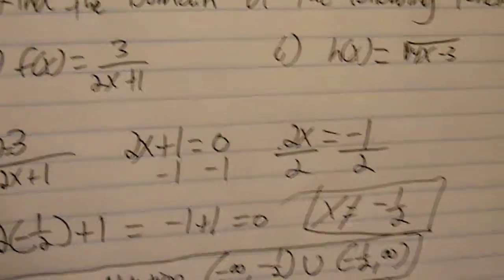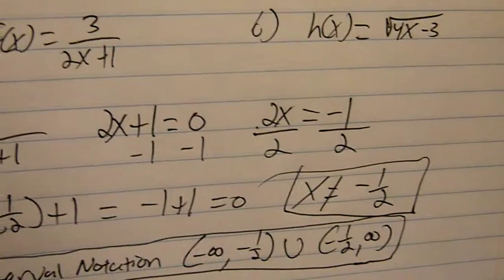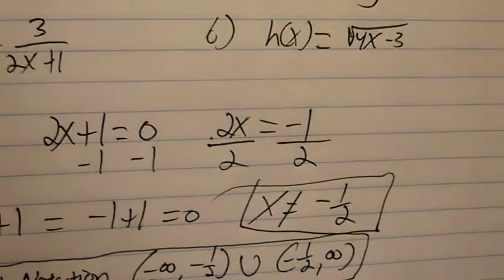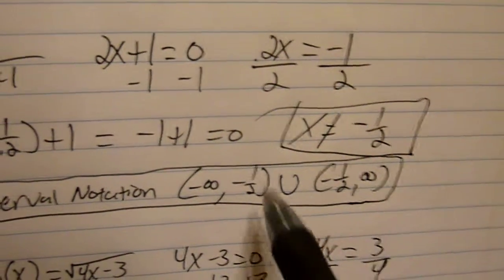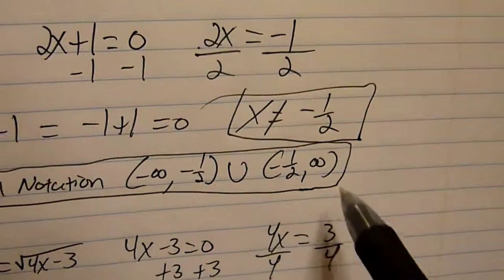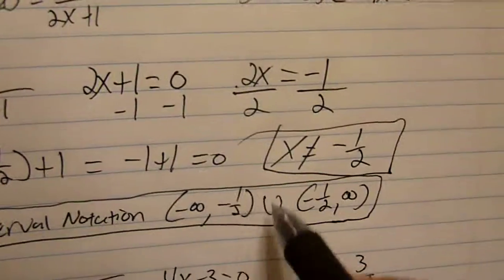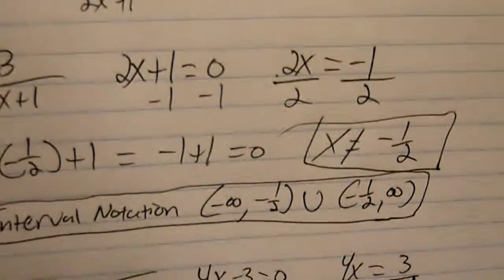Which means x cannot equal negative 1 half. Since it can't equal negative 1 half, it is not included. So in interval notation, your answer is going to look like parenthesis negative infinity to negative 1 half, union, negative 1 half to infinity, parenthesis. You don't use brackets here because it's not included.